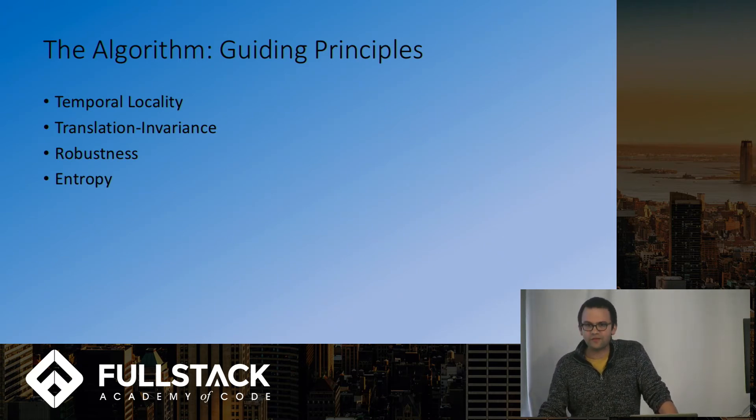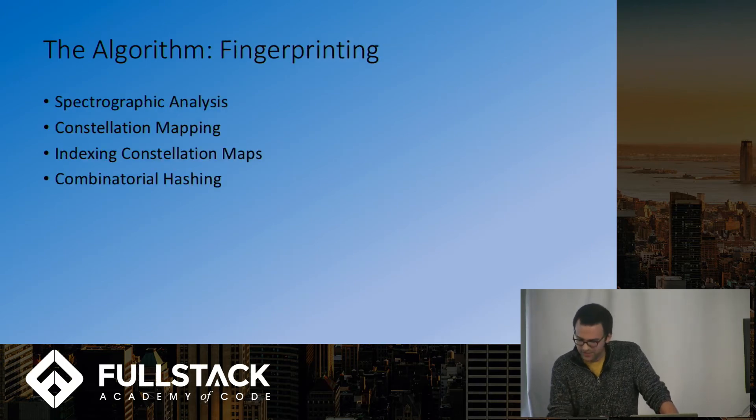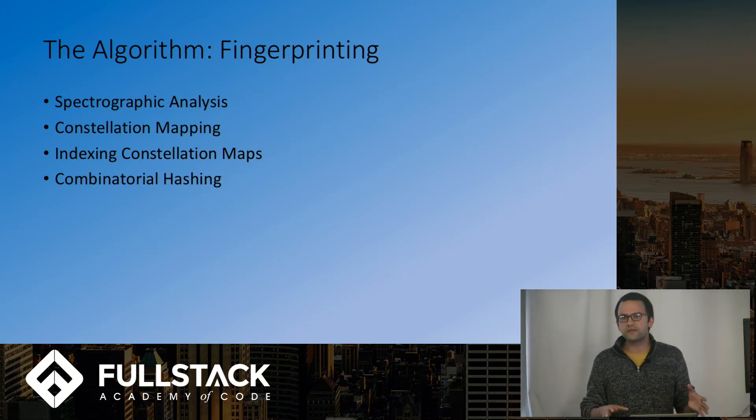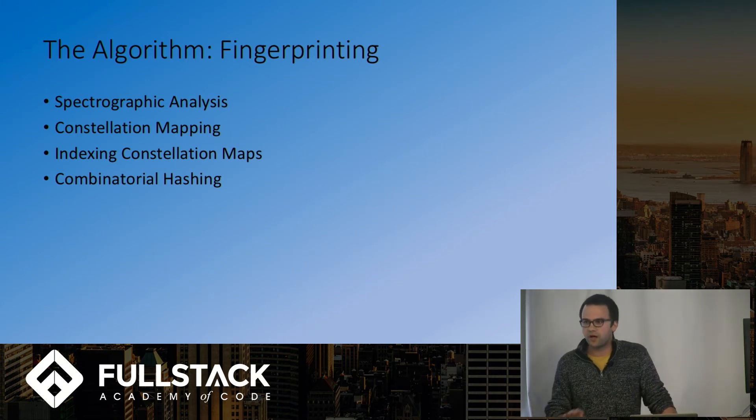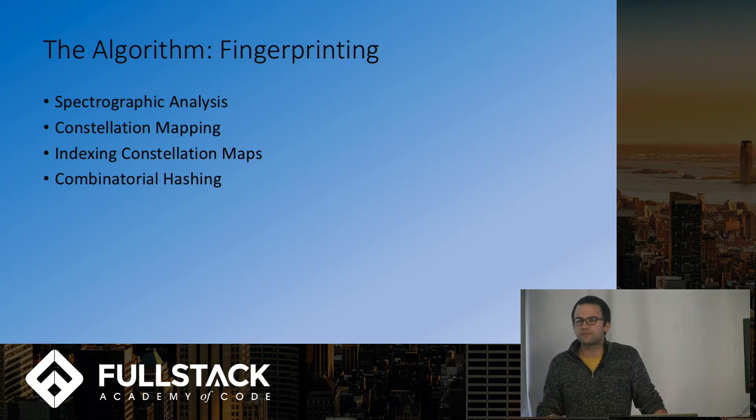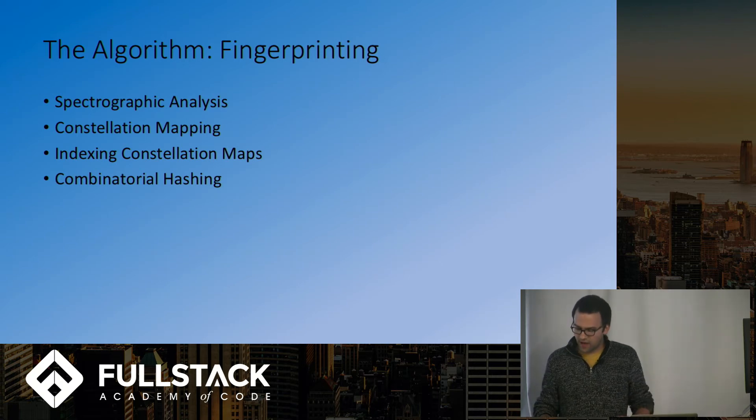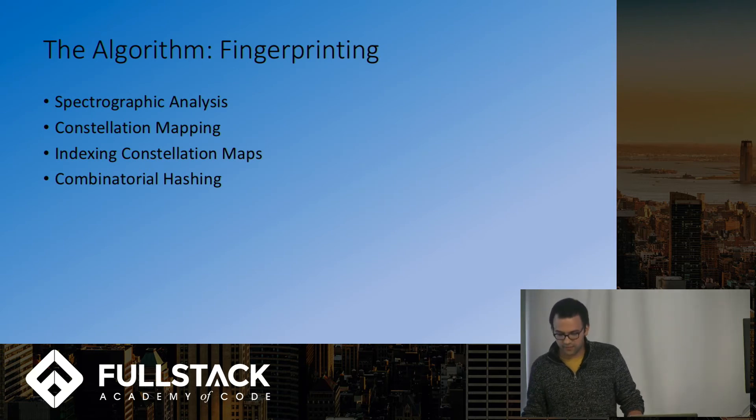So the first step in implementing the algorithm is to index the database. And this is a fairly involved process. First, they produce spectrographic analyses of each audio file in the database. A spectrogram is a three-dimensional visual representation of sound that plots time and frequency and what's usually referred to as intensity, which seems to more or less map onto amplitude. I say more or less because it'll also catch things like overtone collisions. Then they extract the moments of highest intensity from the spectrogram and plot these points on a two-dimensional graph of time and frequency.